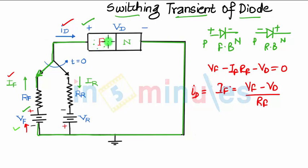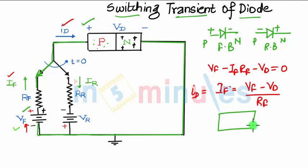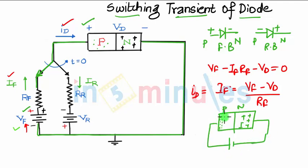The minority carriers in the P-type are electrons, and the minority carriers in the N-type are holes. When positive is connected to the P-type, the electrons in the P-type are attracted to the positive terminal and holes are attracted to the negative terminal. So in the P-N junction, all electrons gather at one end and all holes gather at the other end.